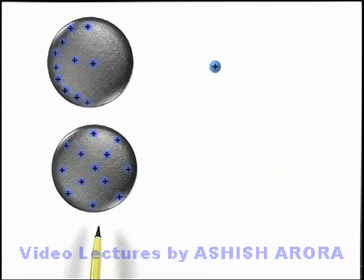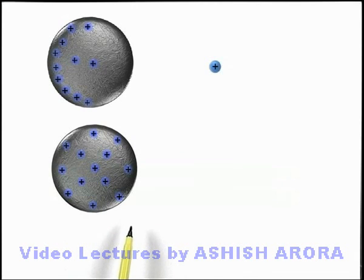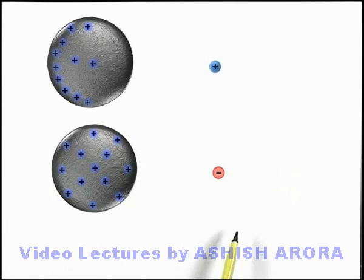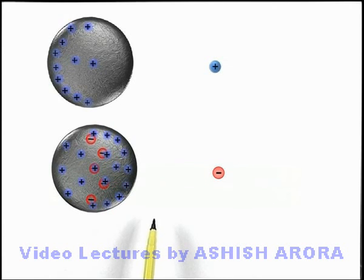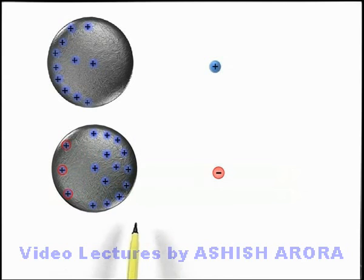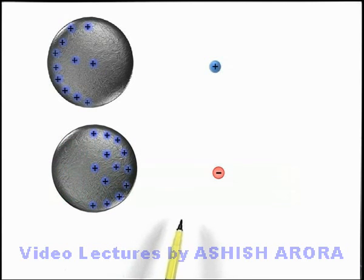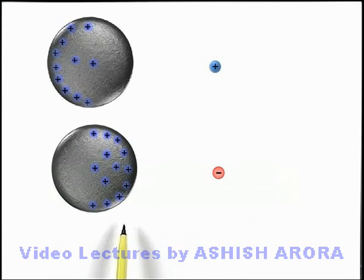A similar phenomenon we can understand in case a negative charge is brought closer. Again, say this is a positively charged sphere and a negative charge is brought close to it. You can see this negative charge will repel the free electrons of this metal sphere, due to which these electrons are shifted from the front side to the rear side. Due to which on the right front side of this charge, you can see that positive charge density is increased and on the left side positive charge density is decreased.